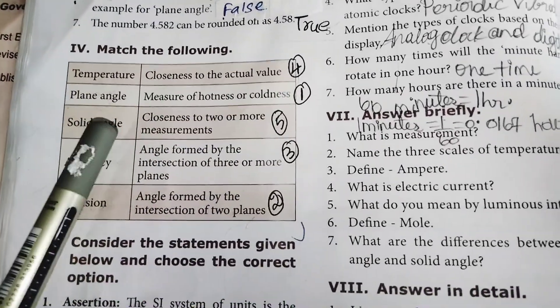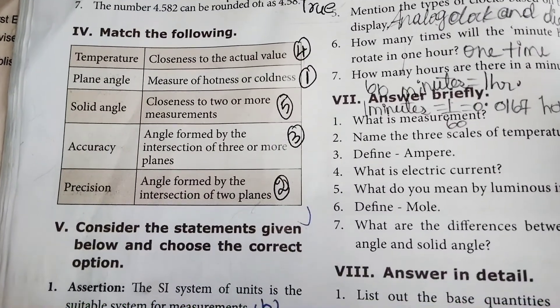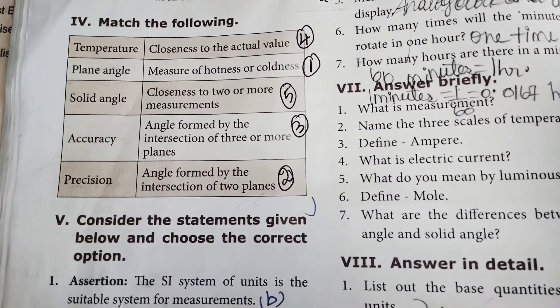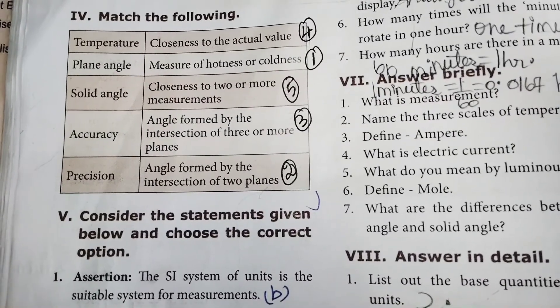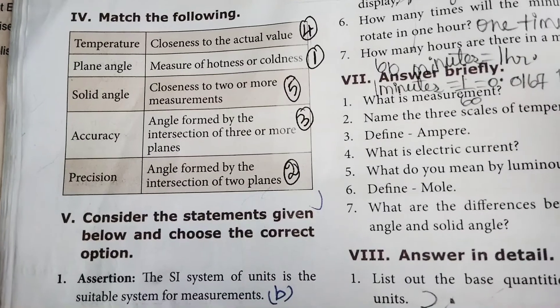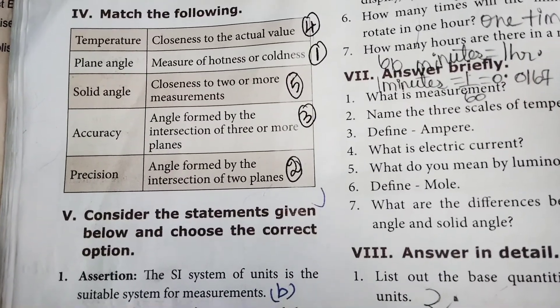Closeness to the actual value, measure of hotness or coldness, closeness of two or more measurements, angle formed by the intersection of three or more planes, angle formed by the intersection of two planes.